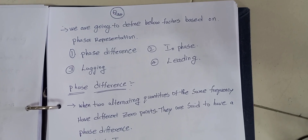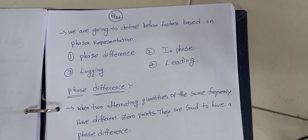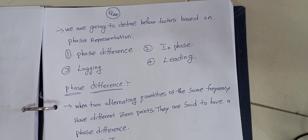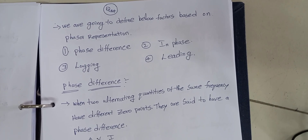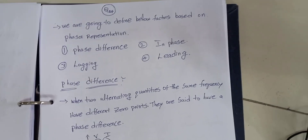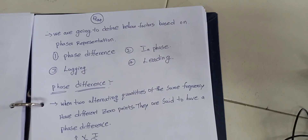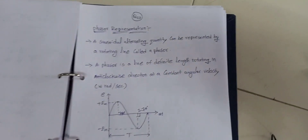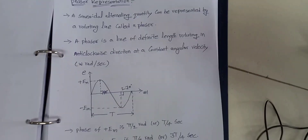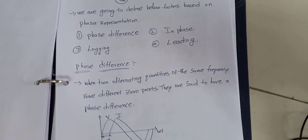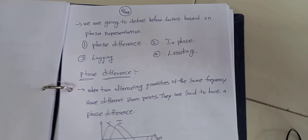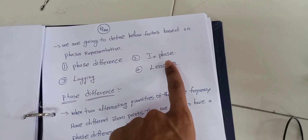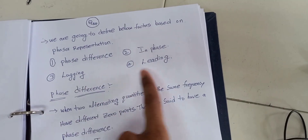After 50, our next question is the 24th question. This one we are going to define a bill of factors based on the phasor representation. Phasor representation we have already done in the previous question, the 23rd question. By using this phasor representation we are going to define phase difference — what is the meaning of phase difference, and in phase, and lagging, and leading.